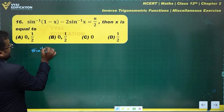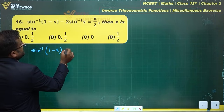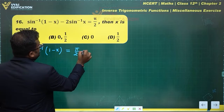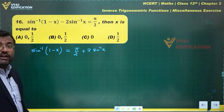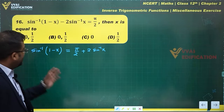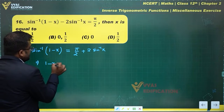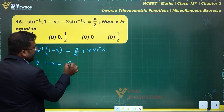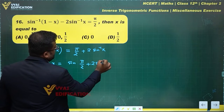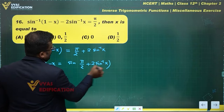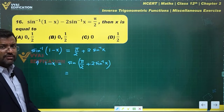Can I write sin⁻¹(1 - x) as π/2 + 2sin⁻¹(x)? Yes. Why do that? So that I can take sin throughout and bring it over here. This gives me 1 - x = sin(π/2 + 2sin⁻¹(x)).